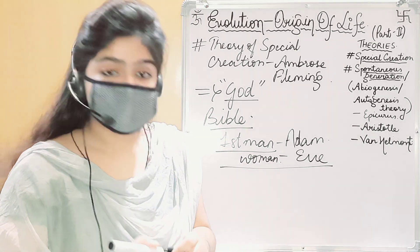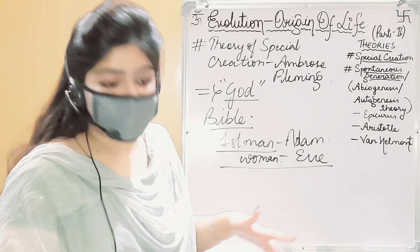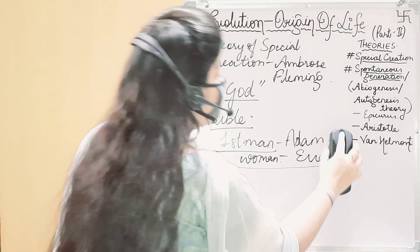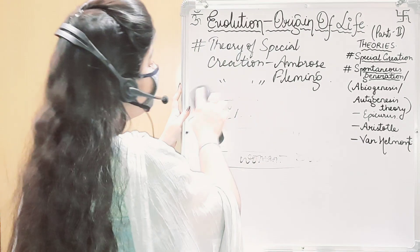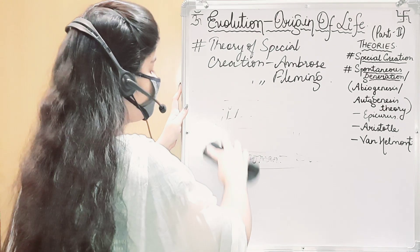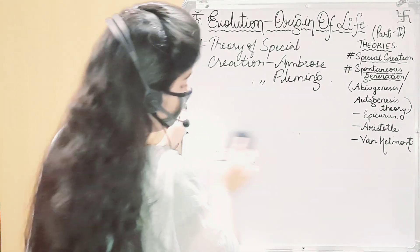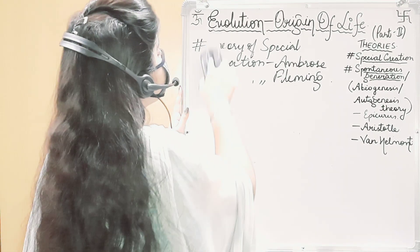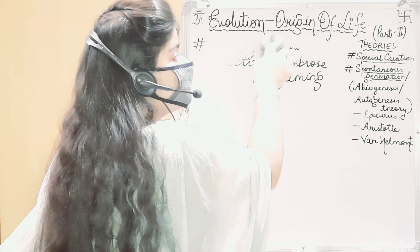Now let's talk about the second theory, which is the Theory of Spontaneous Generation, also called Abiogenesis or Autogenesis theory.